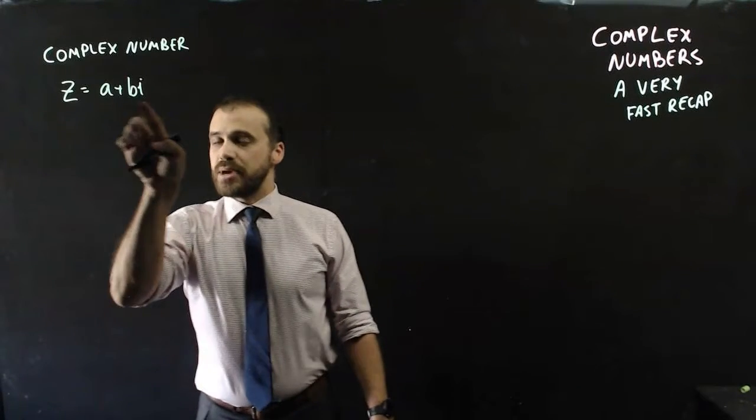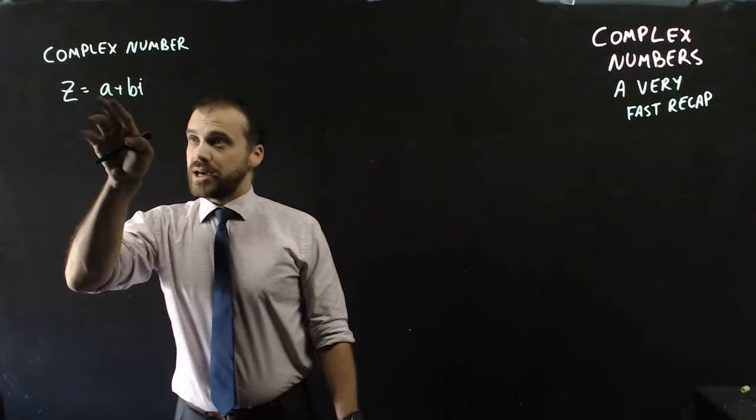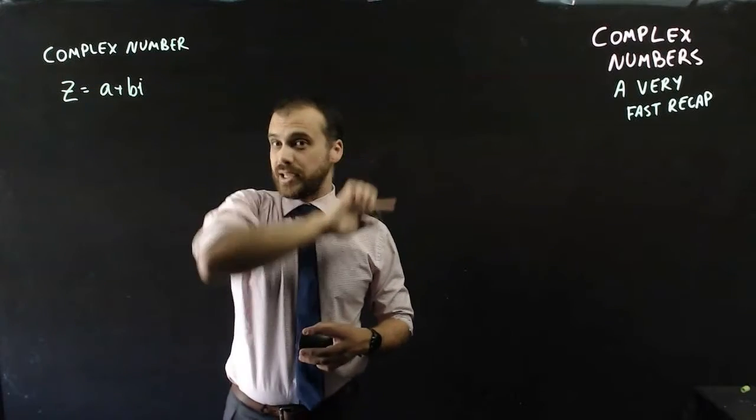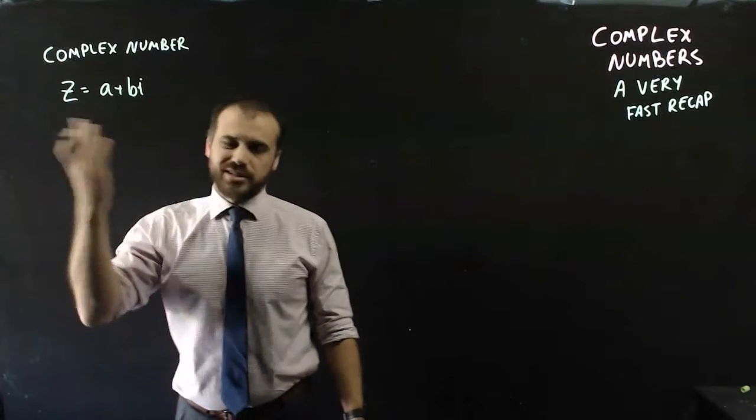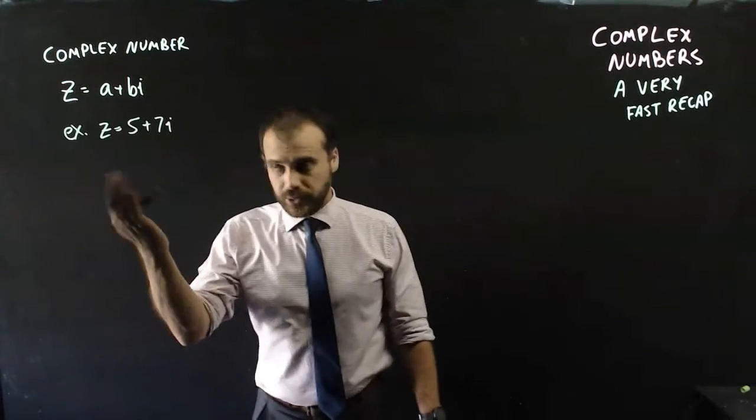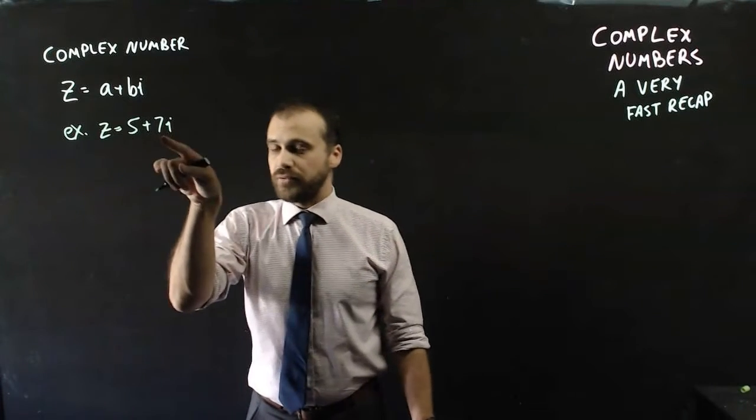So now, if you take some amount of imaginary stuff and some amount of real stuff, you combine them, and you get a complex number, which we always use the letter z to denote. An example here, our complex number is equal to 5 plus 7i.